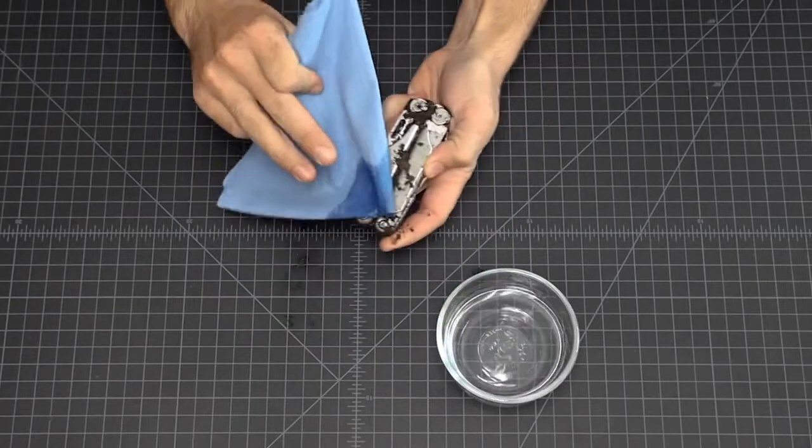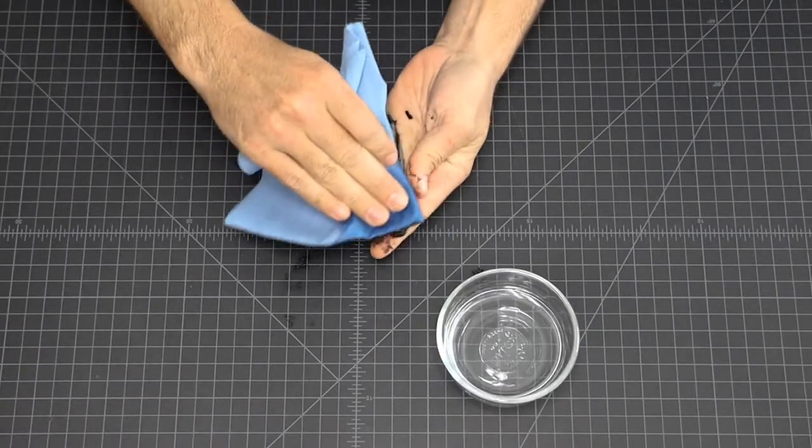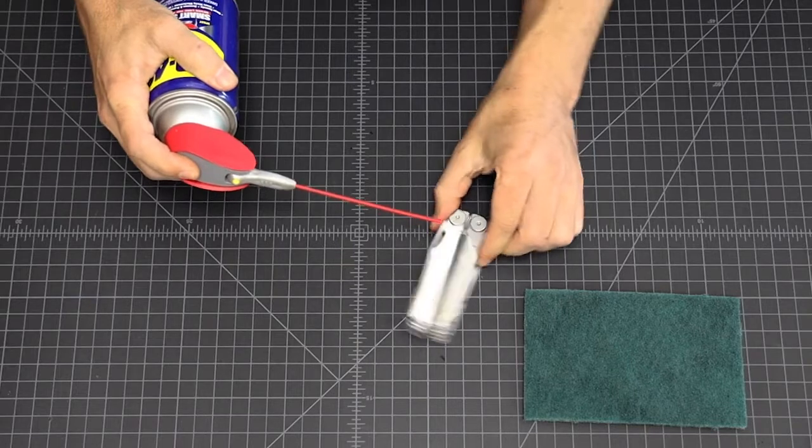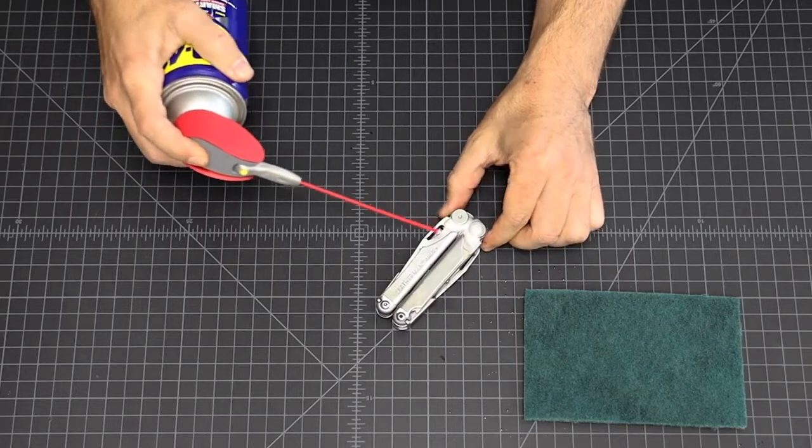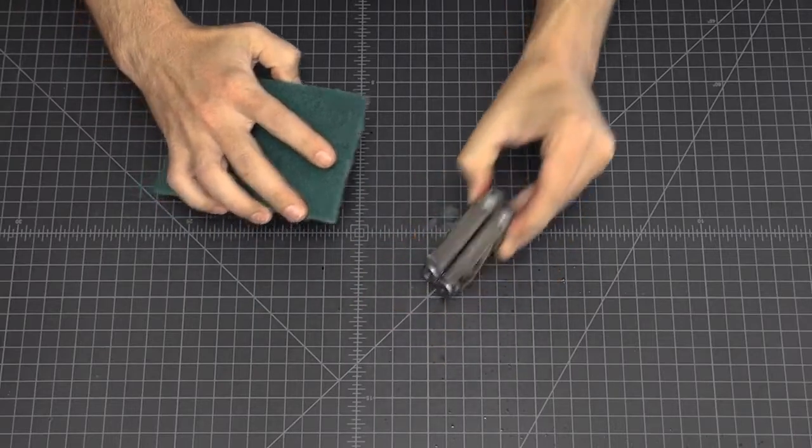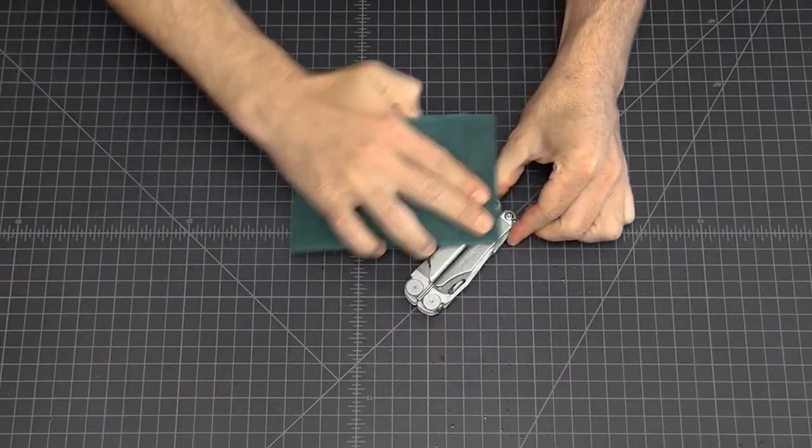First, you get a damp towel and wipe down the exterior of the multi-tool. Next, you'll want to spray some WD-40 onto the specific implements of the tool that need deep cleaning. Then you'll want to buff the stained surfaces with a polishing cloth or non-metallic abrasive like a scotch brite pad.